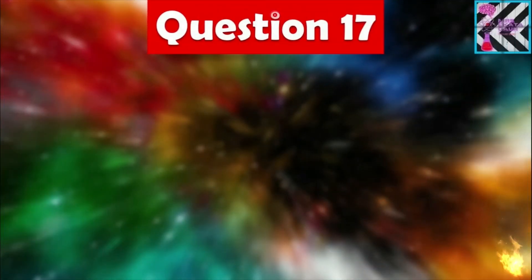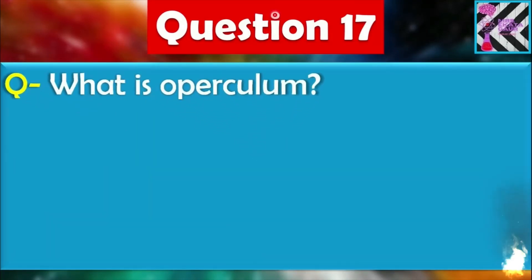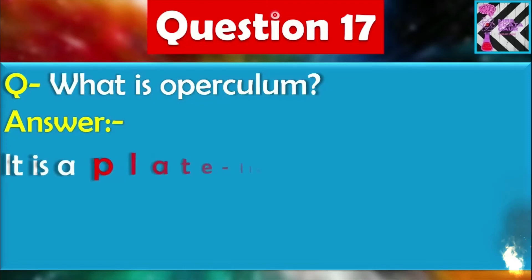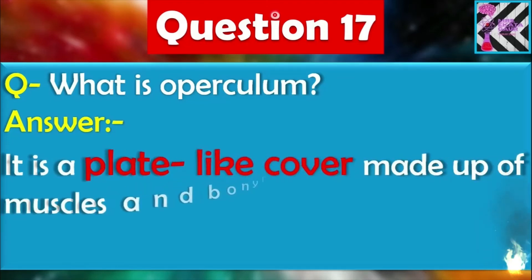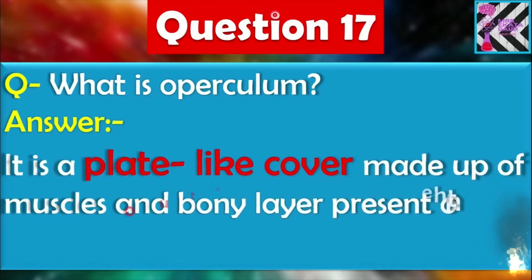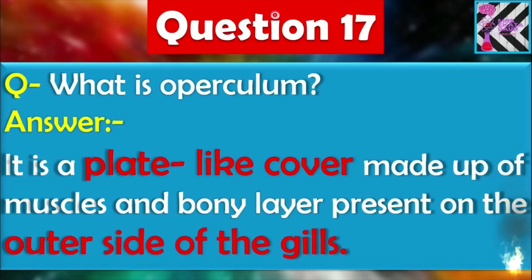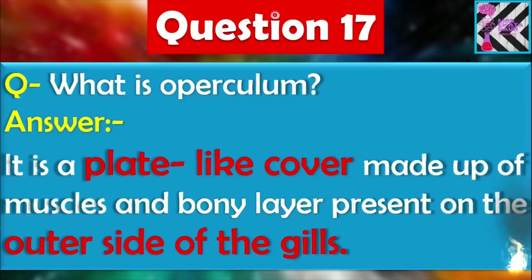Question number seventeen: What is the operculum? It is a plate-like cover made up of muscles and a bony layer present on the outer side of the gills. The operculum covers the opening of the gills. You can get the full detail and see this plate-like structure in my earlier video.